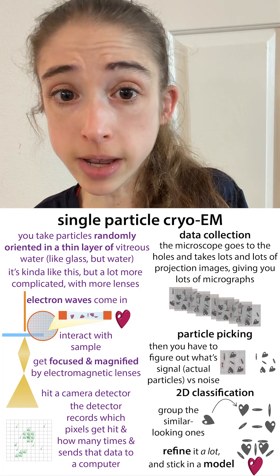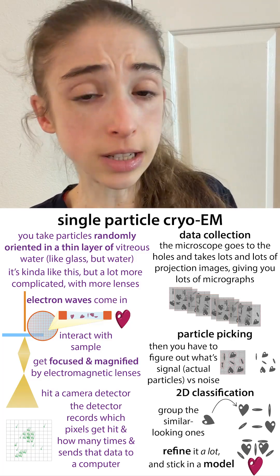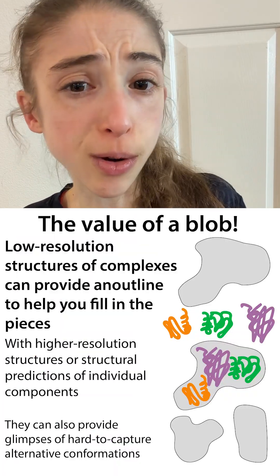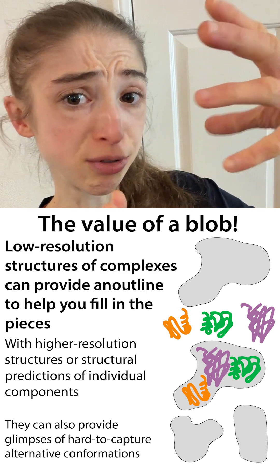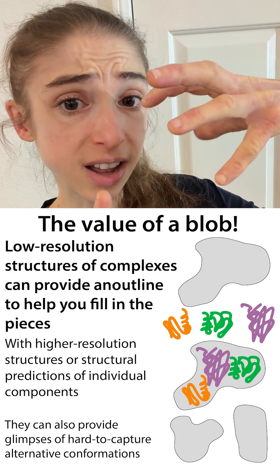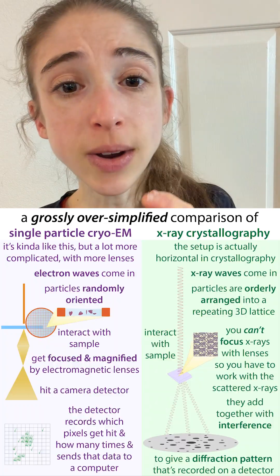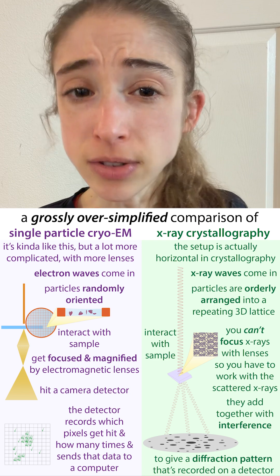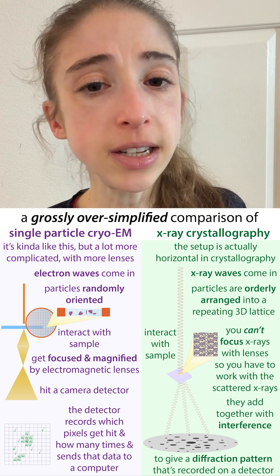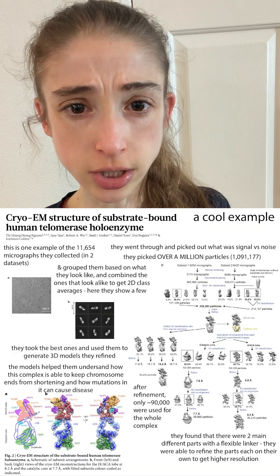Over recent years, cryo-EM — cryo-electron microscopy — has gone from blobology, where it could only generate really blobby structures of proteins and other macromolecules, to a technique that rivals x-ray crystallography in its ability to get high-resolution structures.